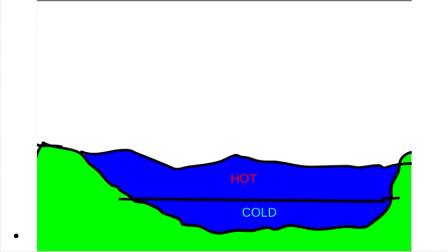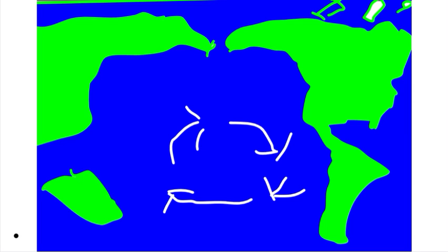In the Pacific Ocean, there's hot and cold water. The hot water is on the surface because hot rises up and cold goes down, so the hot water is at the top and the cold water is at the bottom.